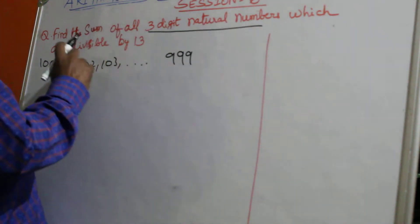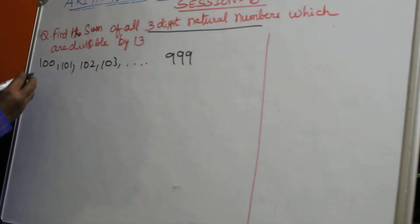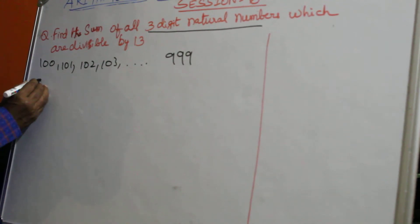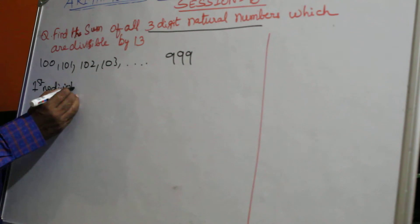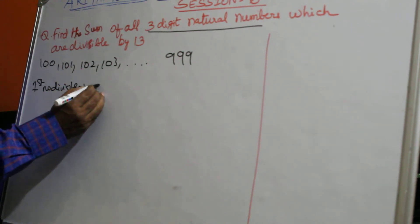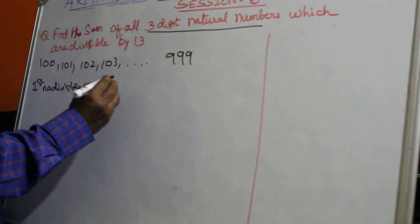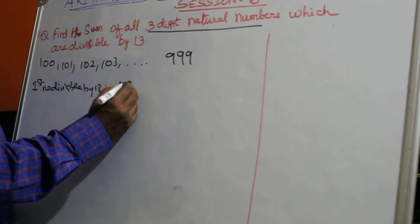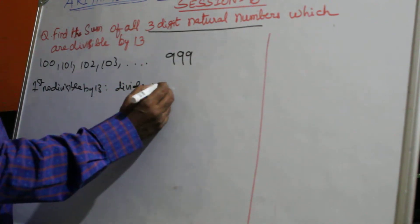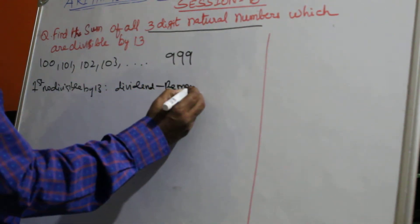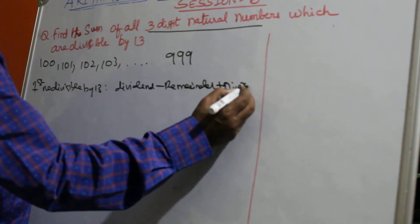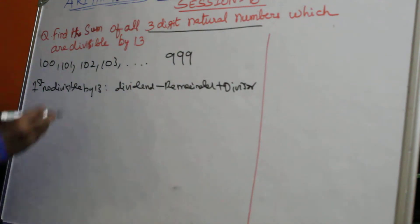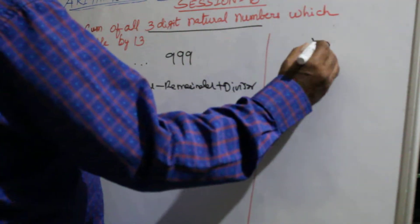In this, you have to find a number divisible by 30. You can use this formula: the first number divisible by 30 is nothing but dividend minus remainder plus divisor. What you do is take the first number 100 and go to the rough work.